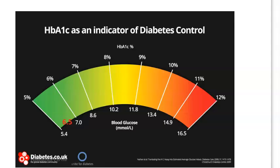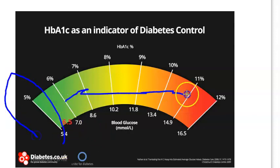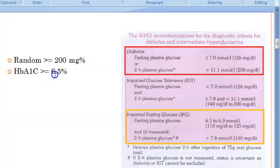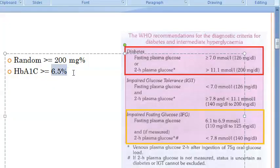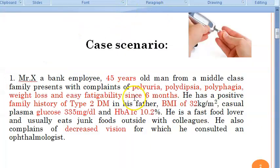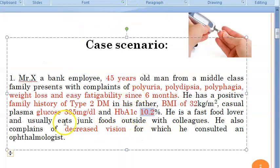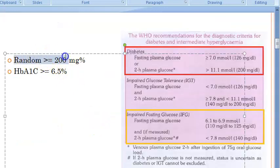Regarding HbA1c — glycosylated hemoglobin — values below 6.5% are normal; above 6.5% indicates pre-diabetes or diabetes. This person has an HbA1c of 10.2%, well above 6.5%. His random blood sugar is 335 mg/dL, and random blood sugar greater than 200 mg/dL confirms diabetes. So all the cutoffs — FPG >126, 2-hour PG >200, random >200 — are exceeded.